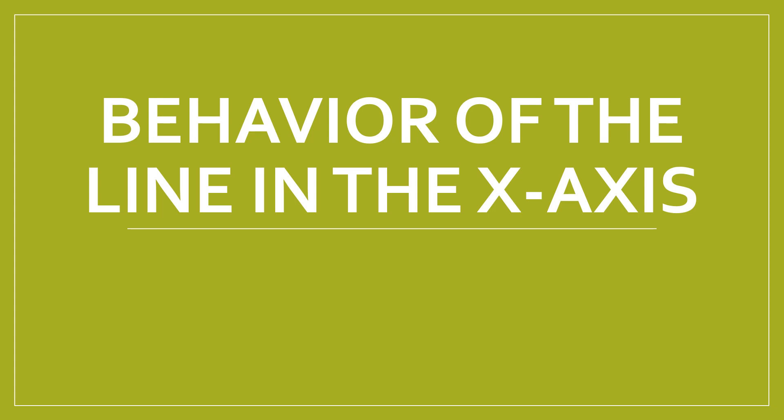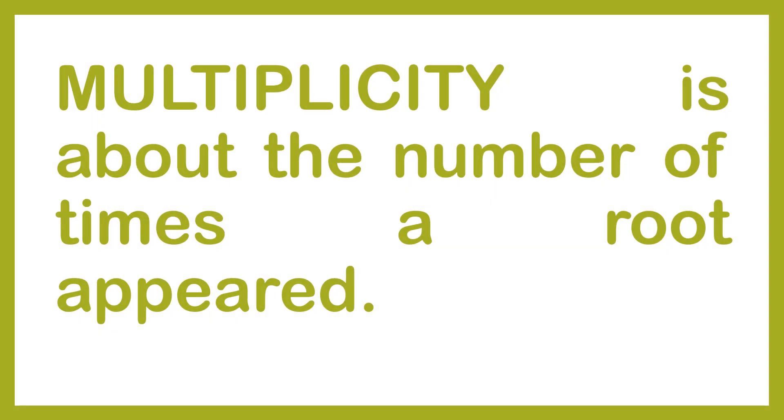Behavior of the line in the x-axis. What does the behavior of the line in our x-axis mean? The behavior of the line, of our line in the x-axis, has something to do with the multiplicity. The definition of multiplicity is about the number of times a root appeared. How many times did your root appear? One, two, three, four, and so on.